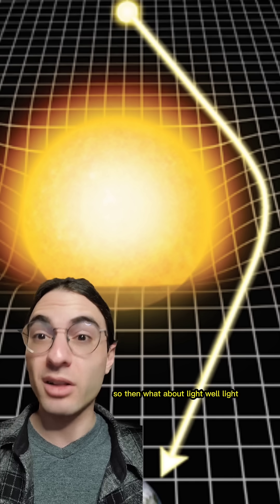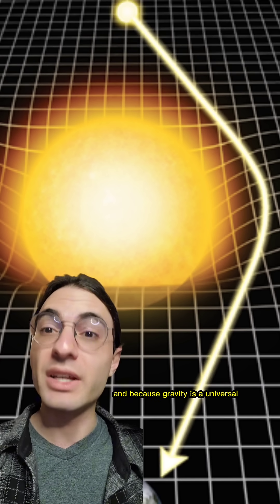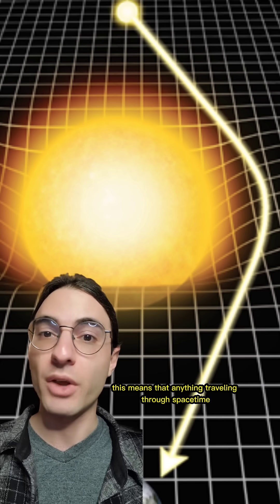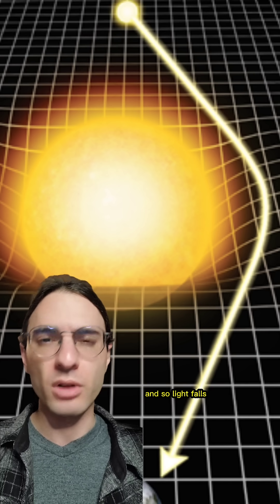So then what about light? Well, light, like everything else in the universe, moves through spacetime. And because gravity is a universal geometric feature of that spacetime, this means that anything traveling through spacetime, whether it has mass or not, will be affected by that curvature. And so light falls.